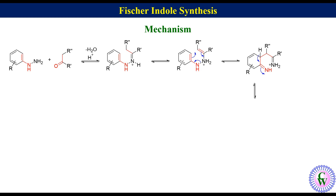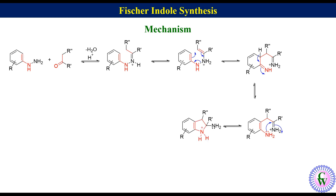Cyclization like this will give a 2-aminoindolinium ion, which after a proton shift gives an indolene-2-aminium ion.